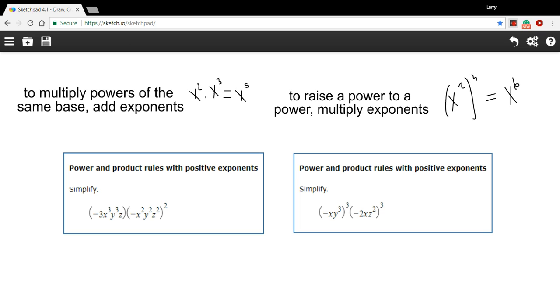The power rule says that when you raise a power to another power, you multiply those exponents. So x squared to the third power is x to the 2 times 3, or x to the sixth power.